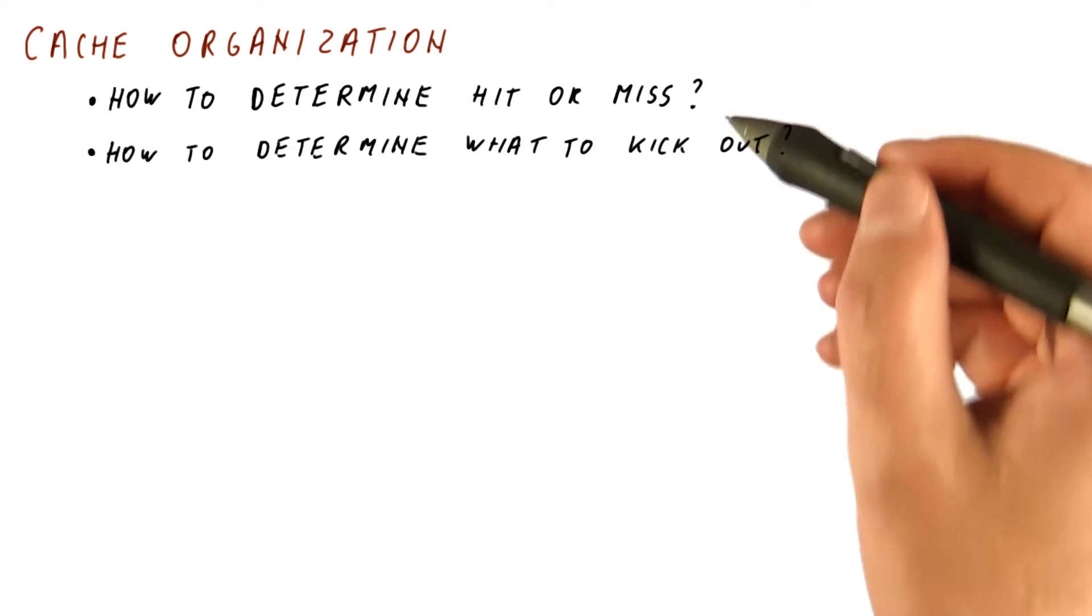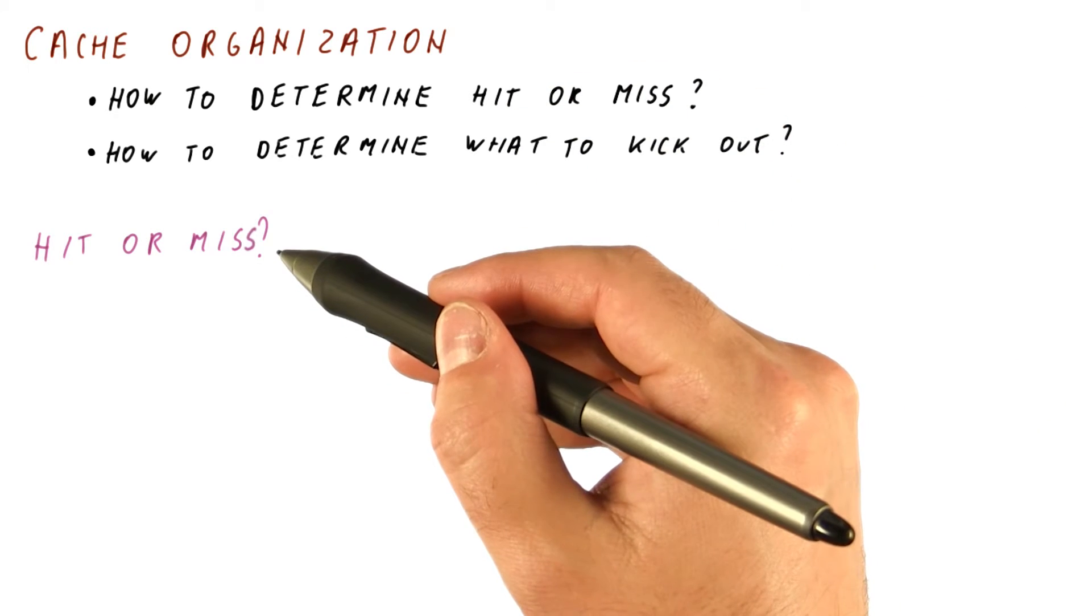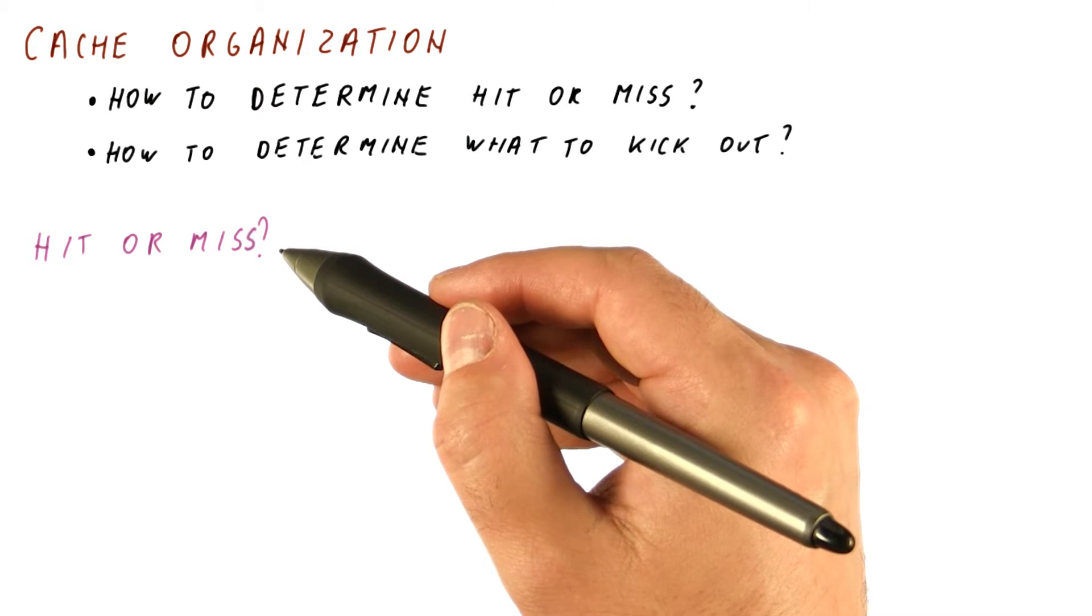So for the first question of how do we know whether we have a hit or a miss, we want something that is very fast. That means it needs to be a table of some sort that we can quickly index with some bits of the address, and it tells us what we have in the cache.